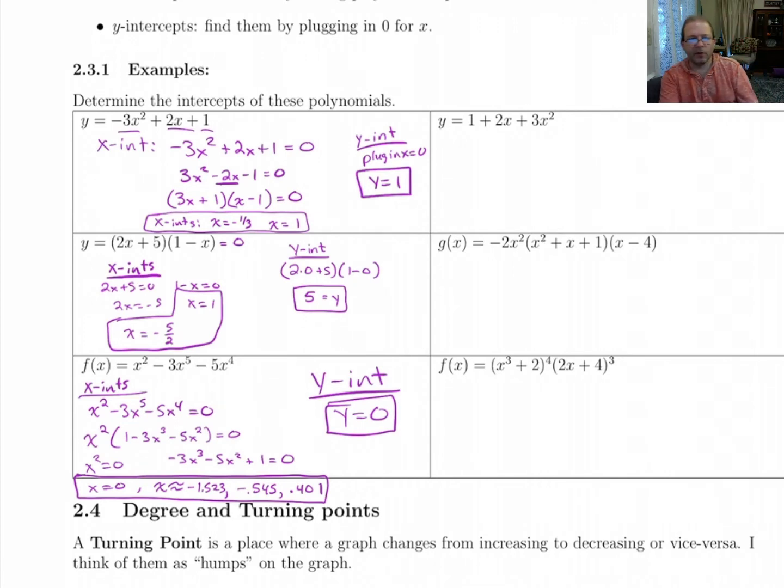Alright. Let's do these other three examples. I'll tell you what I'm going to do. The y-intercepts, since those are easy, I'm just going to do those over here first. For this first one, the y-intercept is 1. For this one, the y-intercept is going to be, let's see, if you plug in 0 for x, you're going to get 0 times 1 times -4. So that's just going to be 0. For this one, if you plug in 0 for x, you're going to get 2⁴, and then 4³. So let's see, 2⁴ is 16. 4³, I think, is 256. No, 4³ is 64. So 64 times 16 is 1,024. So the y-intercepts on those are quick.